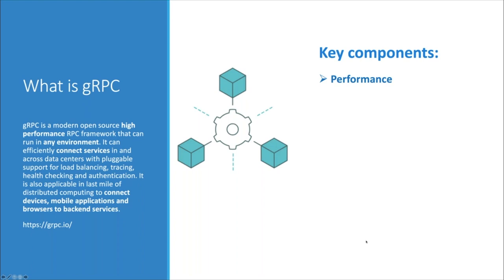A key performance feature of gRPC is that it uses a faster binary protocol for communication called Protobuf, which we'll discuss shortly. gRPC also leverages HTTP/2, which supports multiplexing requests over a single connection, enabling responses to be sent as soon as they're ready — without queuing or extra overhead.